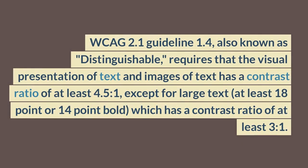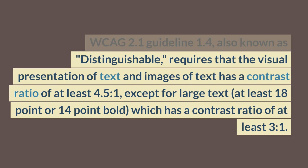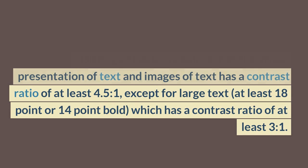The WCAG 2.1 guideline 1.4, also known as Distinguishable, requires that the visual presentation of text and images of text has a contrast ratio of at least 4.5 to 1, except for large text — at least 18 point or 14 point bold — which has a contrast ratio of at least 3 to 1.